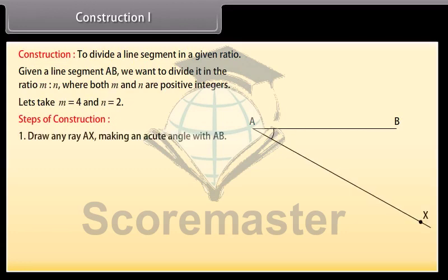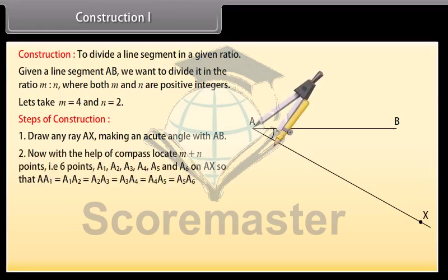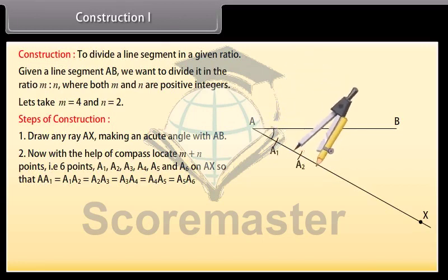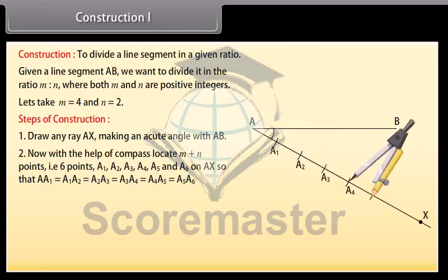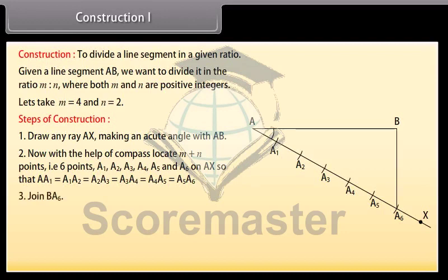Steps of construction: Draw any ray AX making an acute angle with AB. Now with the help of a compass, locate M plus N points, that is 6 points — A1, A2, A3, A4, A5 and A6 — on AX so that AA1 equals A1A2 equals A2A3 equals A3A4 equals A4A5 equals A5A6. Join B to A6.